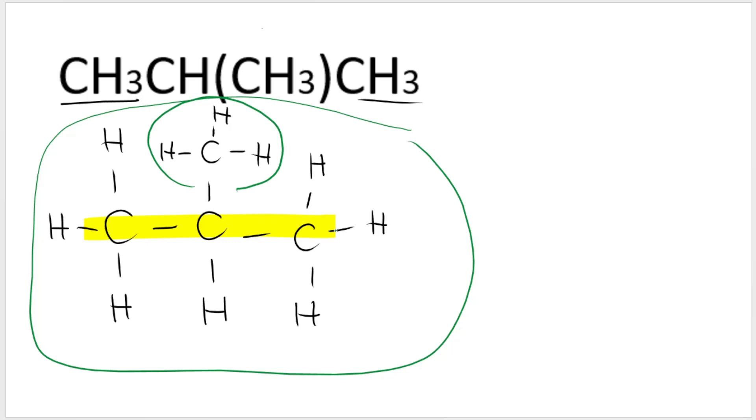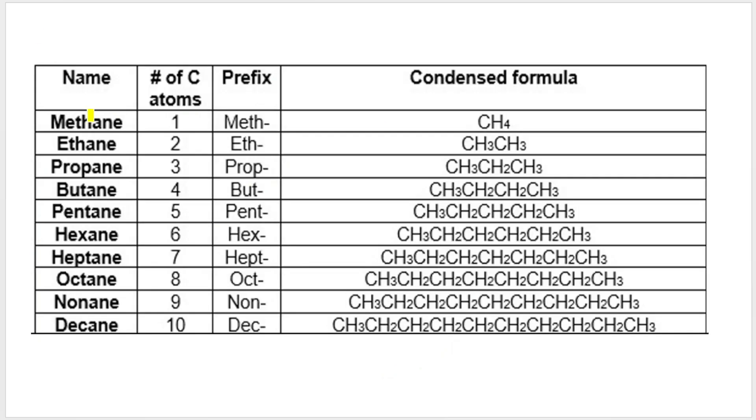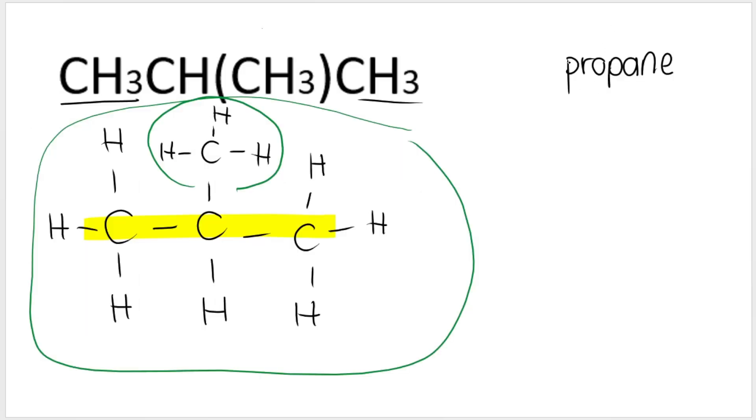Here's the longest chain. That means that this is a branch. How many carbons in the longest chain? Three. So my name is going to end in ane because it's an alkane and it's going to be prop. Why prop? Because three is prop. So our name is going to end in propane, like that over there. But in front of it, over here, needs to come the branches.